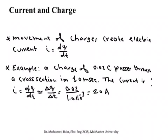Another way of expressing the relationship between current and charge is that the current is the rate of change of charge. We would like to see how much charge flows through a cross section in a specific time: I = delta Q / delta T. For example, if 0.002 coulombs flow through a cross section in one millisecond, then I = 0.002 / 10 to the minus 3 = 2 amperes. Current is really the rate of change of charge.